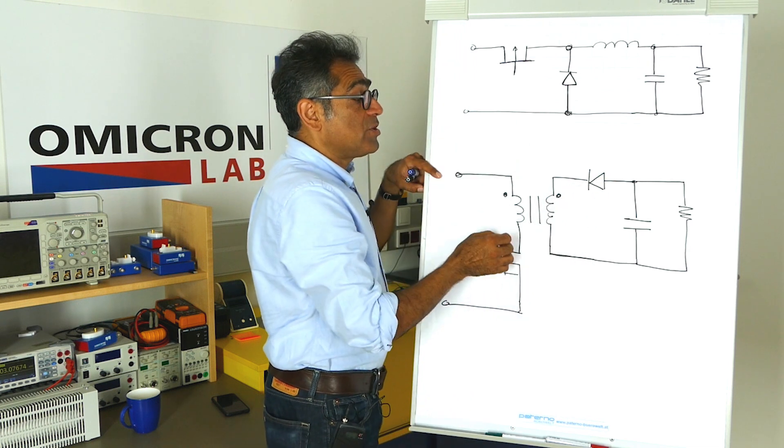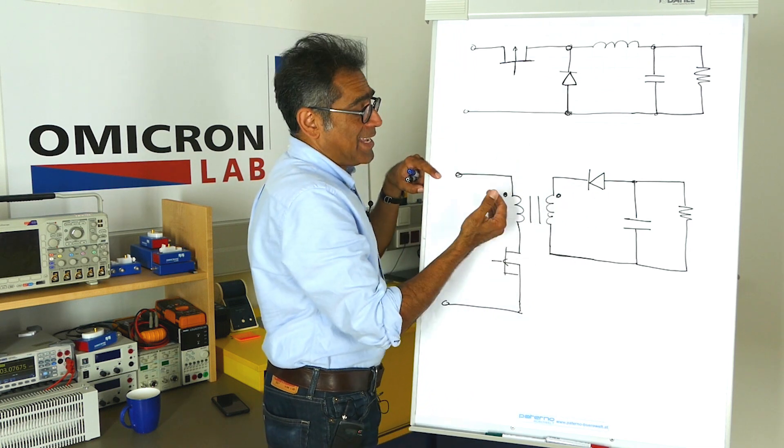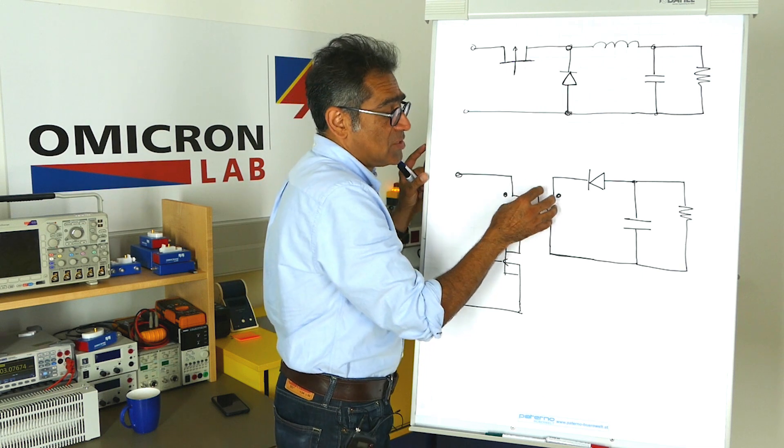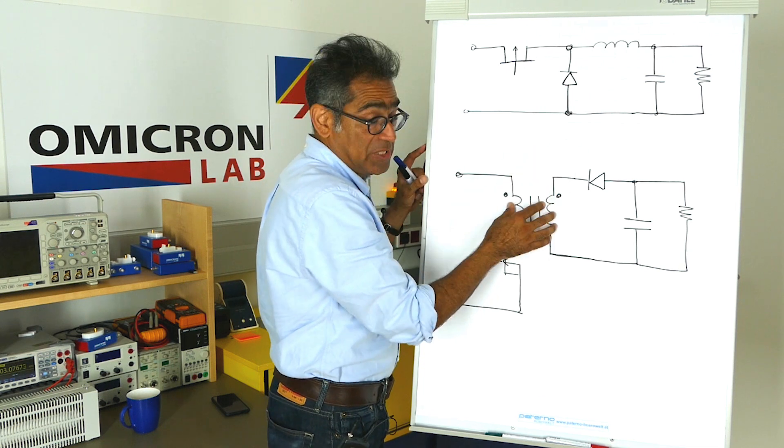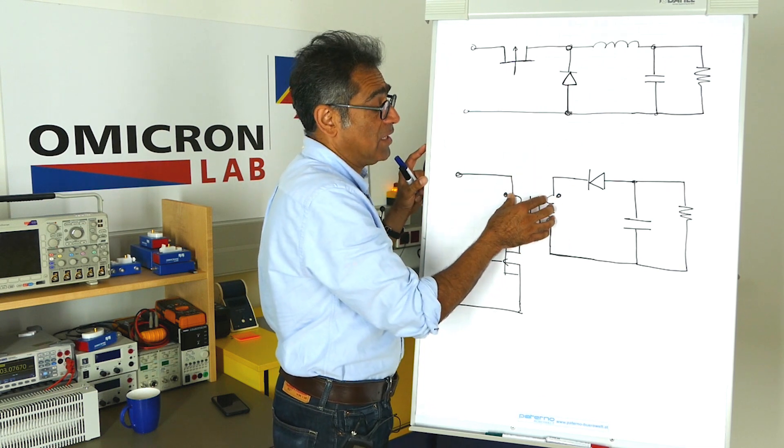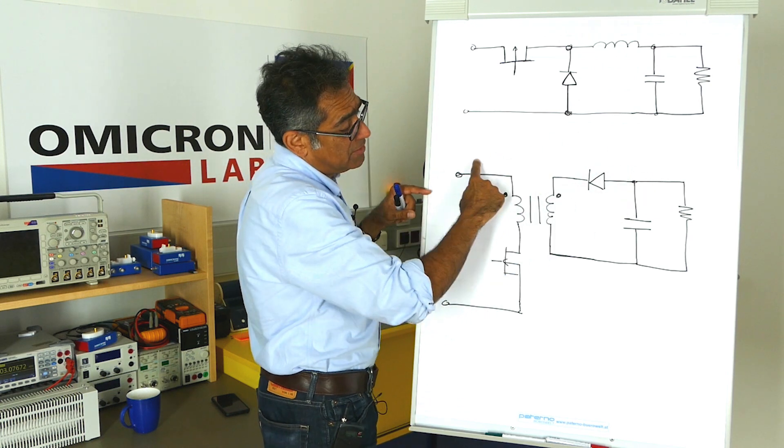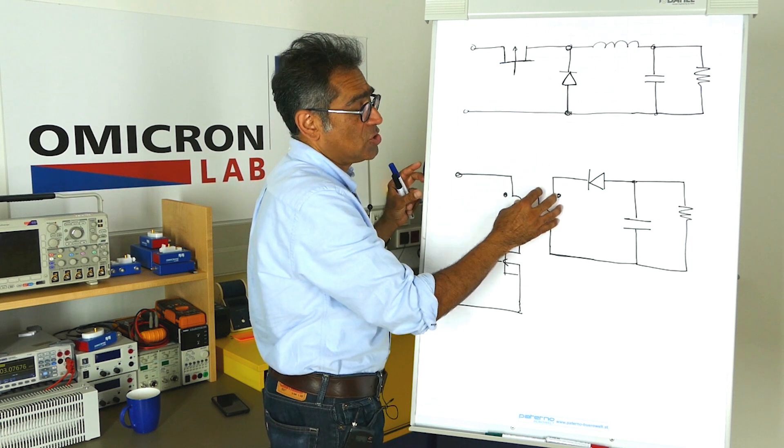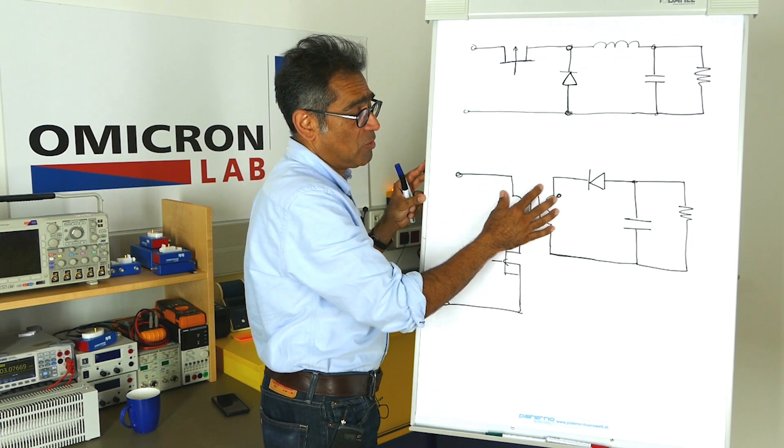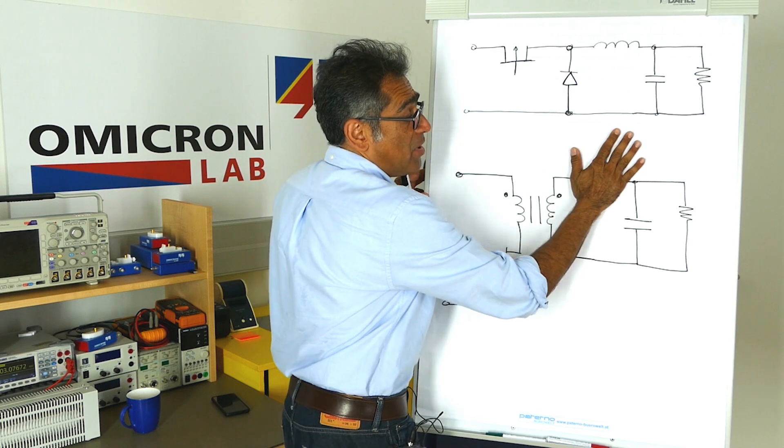Now when you turn it off, what happens is that the energy stored in this coupled inductor or flyback transformer during the on period gets delivered into the output. So during the on period the current flows, energy gets stored in the flyback transformer, but this is reverse biased.